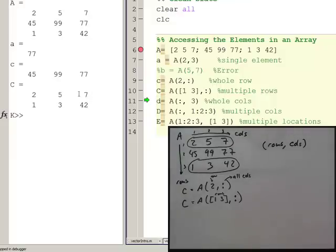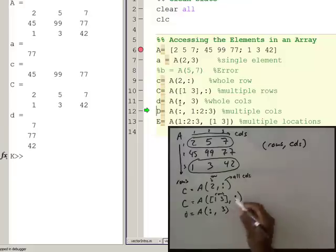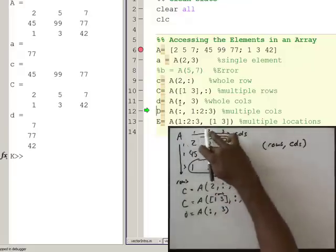So just like we did that with rows, we can do that with columns as well. So if you look on line 11, D is, so on D, we're saying give us all rows, column 3. So all rows, column 3, all rows, third column.